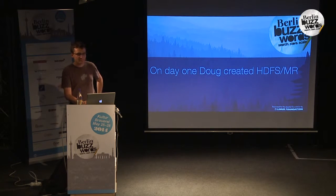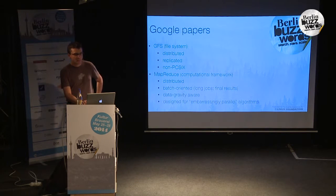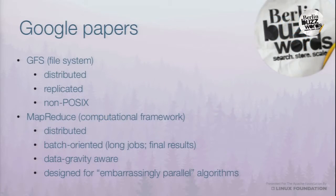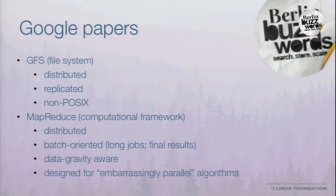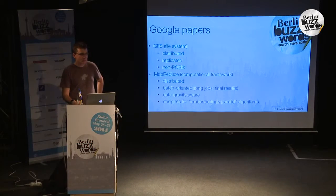Doug Cutting was the original implementer of Hadoop. Hadoop consisted of HDFS and MapReduce, and really came from Google papers. Doug read two papers — one on GFS (Google File System) and another on MapReduce — and implemented both in the free and open source Java-based Hadoop. GFS was meant to be fully distributed, scale-out storage, replicated because it was meant to run on commodity hardware which fails all the time. To achieve this, they made a compromise by not making it a POSIX file system — so GFS is actually a non-POSIX file system.